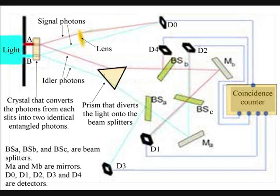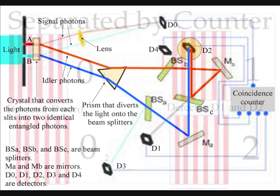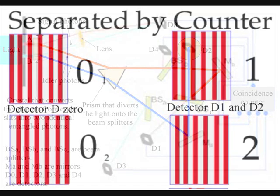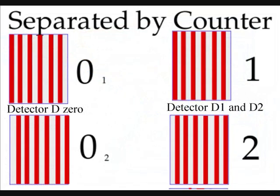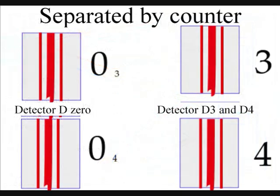When the experimenter looked only at signal photons whose entangled idler were detected at D1 or D2, they found an interference pattern. However, when they looked at the signal photon whose entangled idler were detected at D3 or similarly at D4, they found no interference pattern.